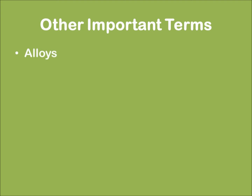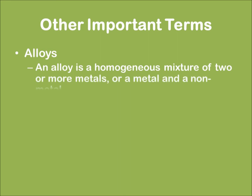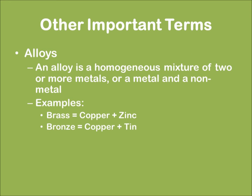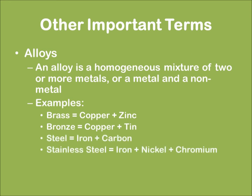Now let us learn about alloys. An alloy is a homogeneous mixture of two or more metals, or a metal and a non-metal. Examples include brass, bronze, steel, stainless steel, solder, and cast iron.